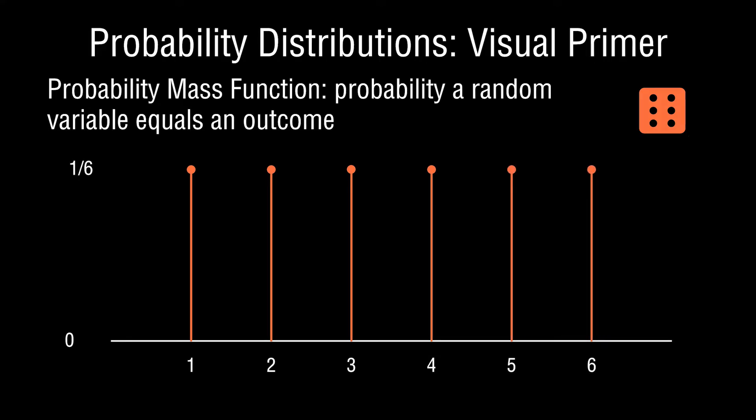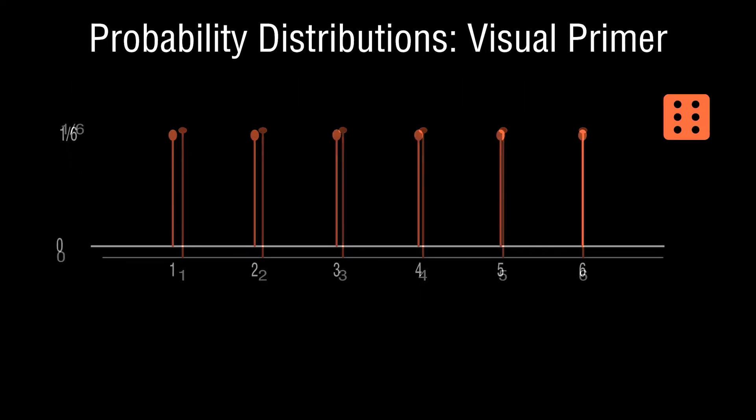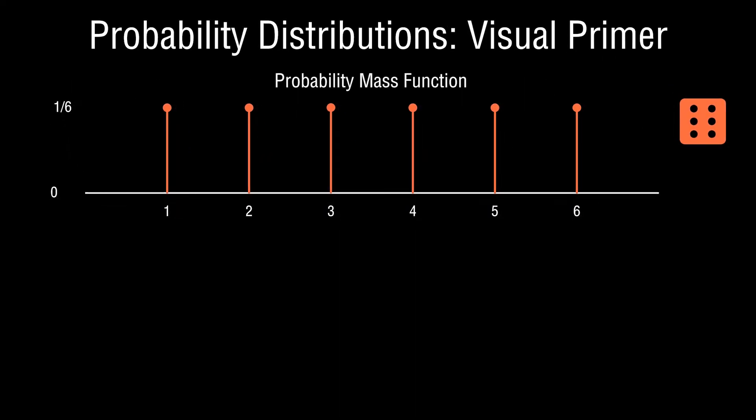If you've studied probability and heard that a probability mass function is associated with discrete random variables, hold that thought — we'll come back to that in a second. But now you should know what a random variable is, as well as a probability mass function. The third item to introduce is the idea of a cumulative distribution function.